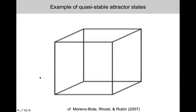I'll begin with the Necker cube. If you stare in the middle for a while, at some point this face might be at the front in a left downward-looking orientation, but if you keep staring, you might see a switch to the top face becoming more of an upward rightward-looking cube. This is a well-known bi-stable percept, and the quasi-stability is the fact that after seeing one percept for a while, it might just switch to the other one, driven by adaptive processes in the brain.